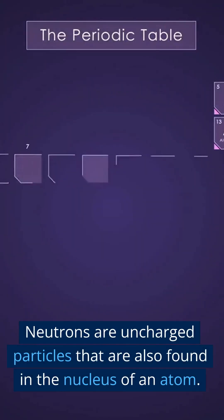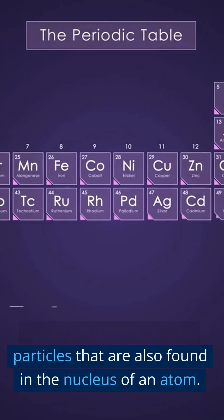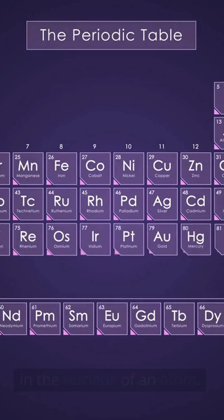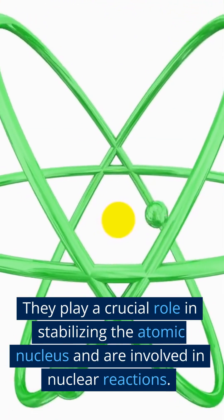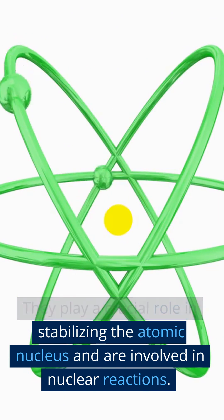Neutrons are uncharged particles that are also found in the nucleus of an atom. They play a crucial role in stabilizing the atomic nucleus and are involved in nuclear reactions.